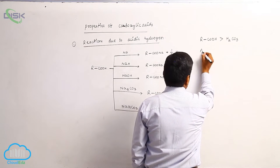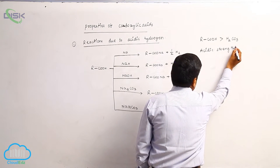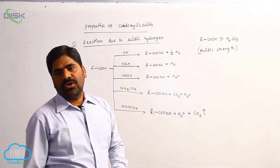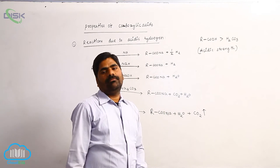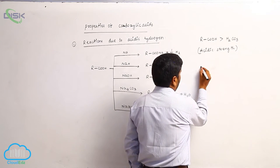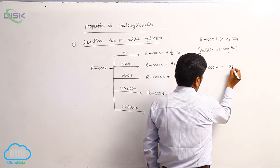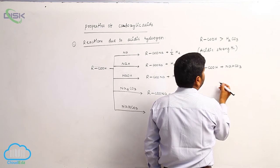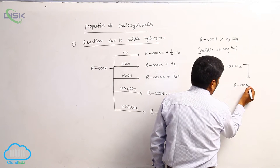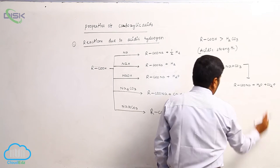This is the acidic strength of carboxylic acid. That is the reason why carboxylic acid easily reacts with sodium carbonate and bicarbonate and liberates CO2 gas. RCOOH reacts with sodium bicarbonate to give RCOONa, H2O, and CO2 gas — CO2 effervescence is released.